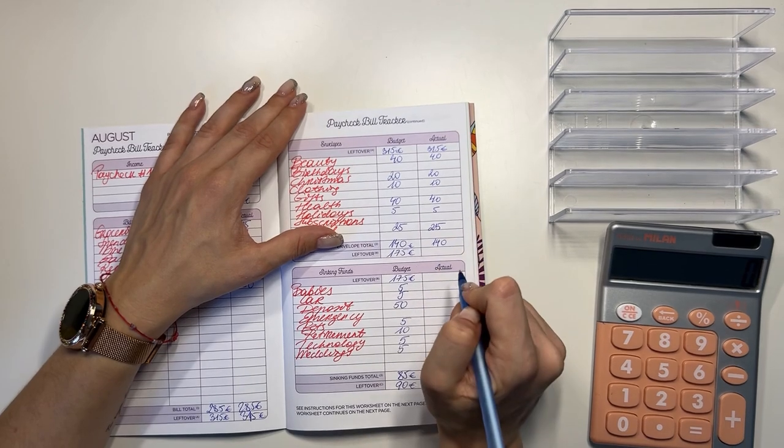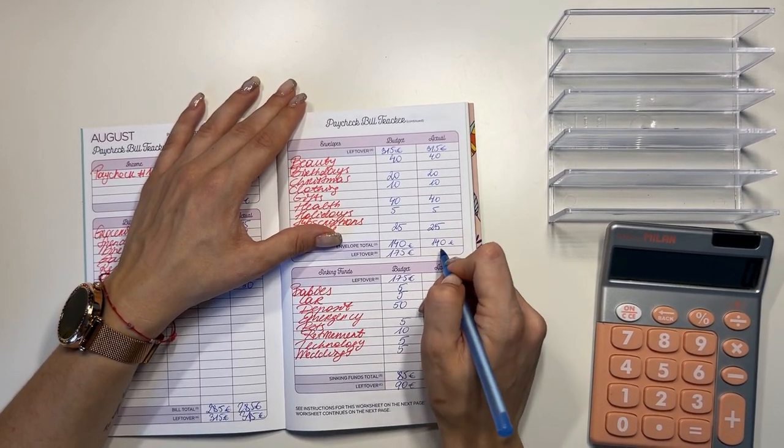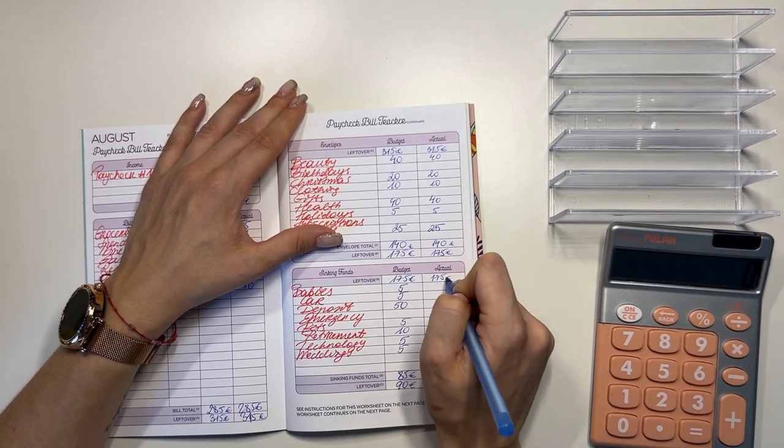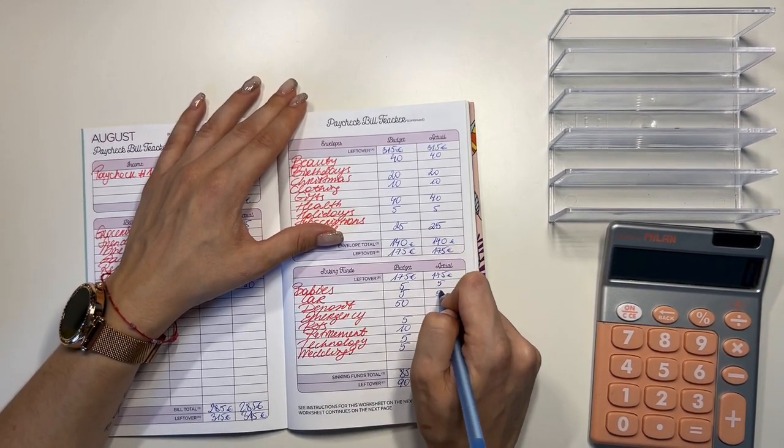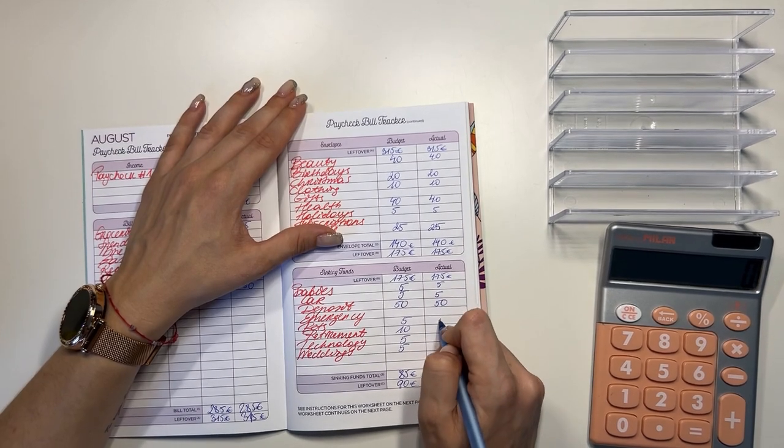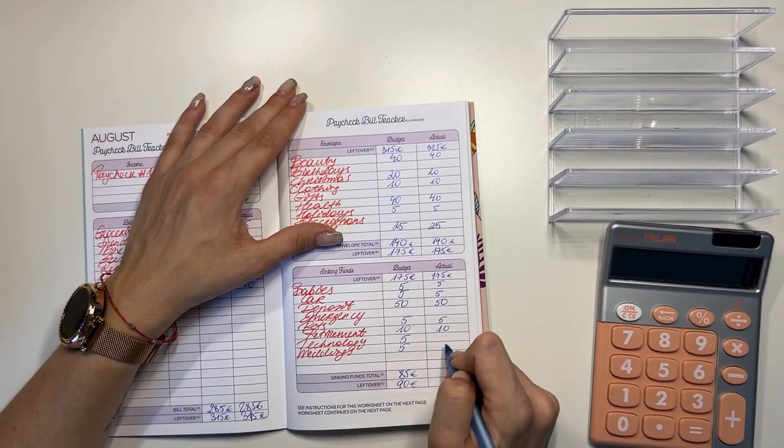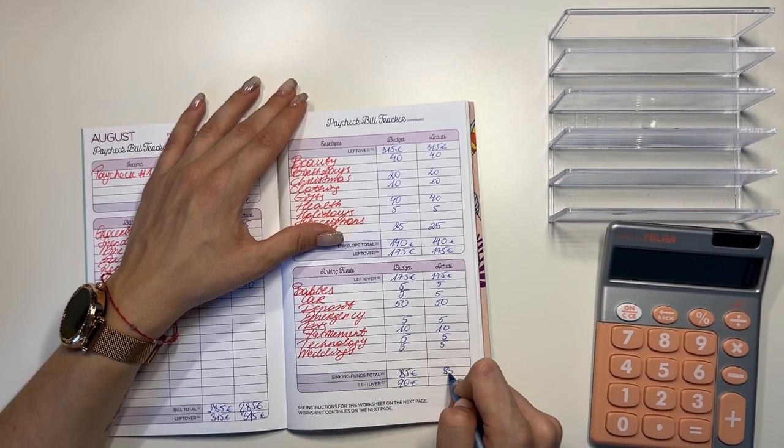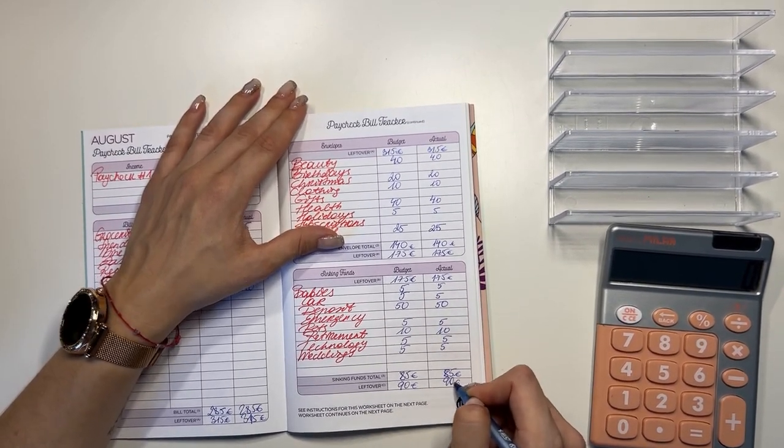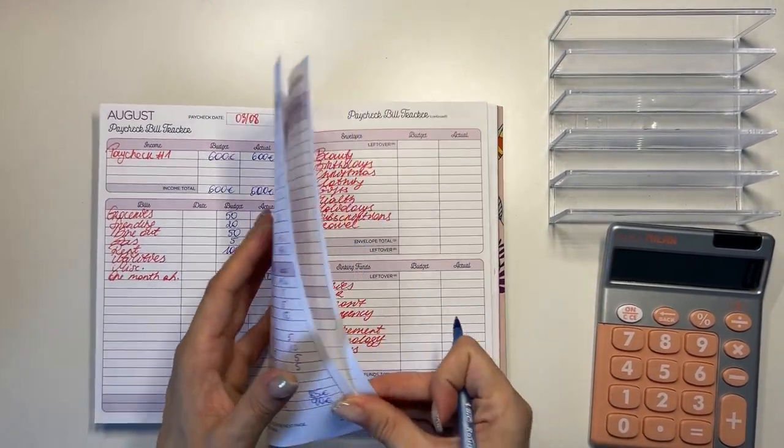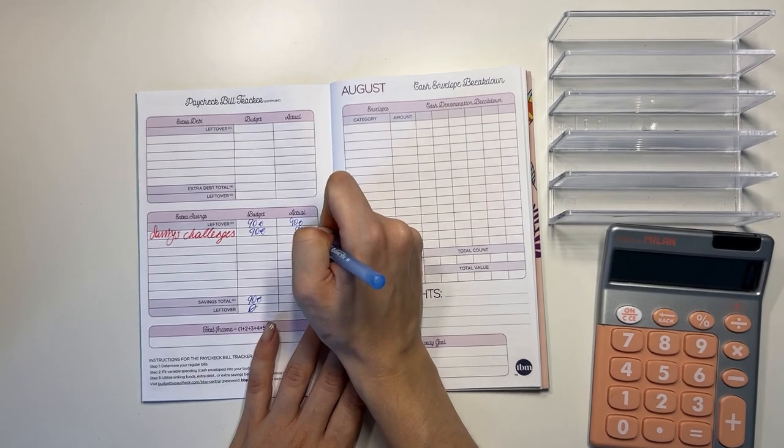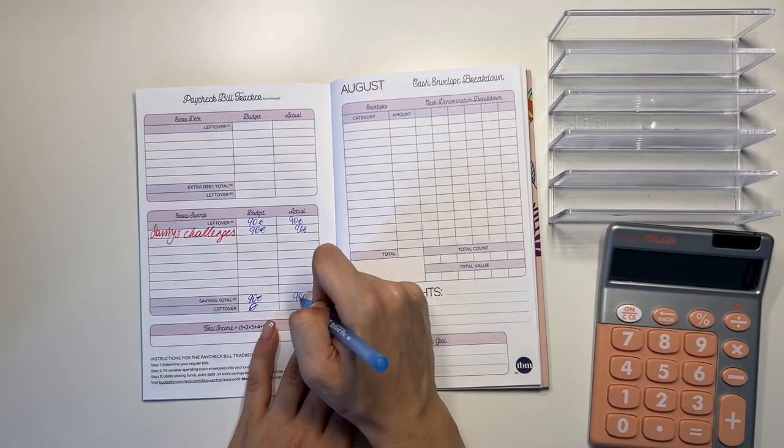315 minus 140 was 175, and babies got a 5 and car got a 5, deposit got a 50, pets got a 5, retirement a 10, technology and weddings a 5. So that was 85, 90 left over, and we brought that 90 to our savings challenges. So that was what we stuffed last week in savings challenges.